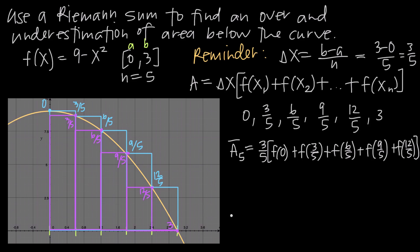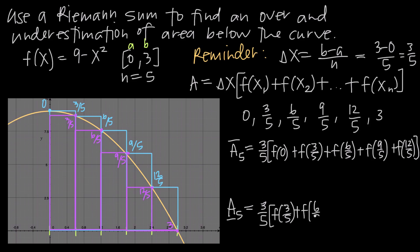For the underestimation, we write A sub 5 with a bar below, indicating underestimation. That equals delta x, 3 fifths, multiplied by the sum using right endpoints: f of 3 fifths, plus f of 6 over 5, plus f of 9 over 5, plus f of 12 over 5, plus f of 3. This gives us the underestimation of area.